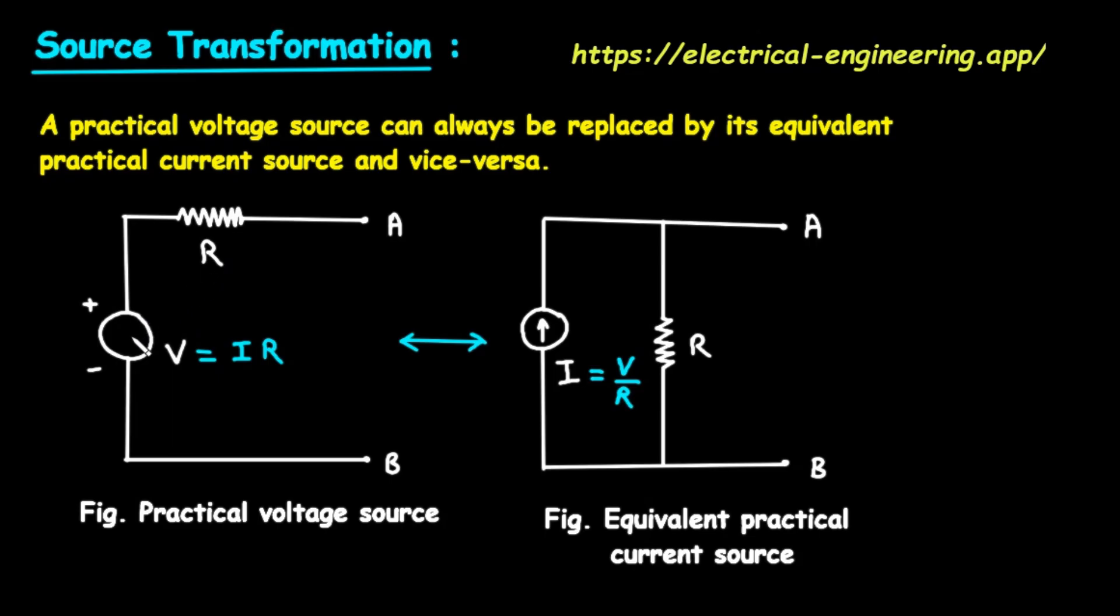It has two components connected in a line, which we call a series connection. The first component is a circle with a plus sign at the top and a minus sign at the bottom. This symbol represents an ideal voltage source. It's the part that produces the voltage. We'll call this voltage V. The second component, connected right next to it, is a zigzag line labeled R. This symbol represents a resistor. This resistor R represents the internal resistance of the source.